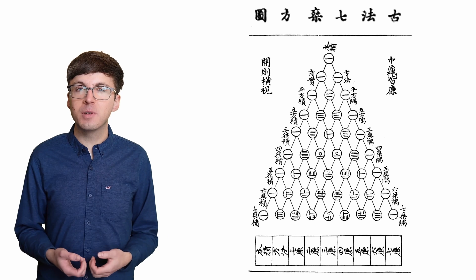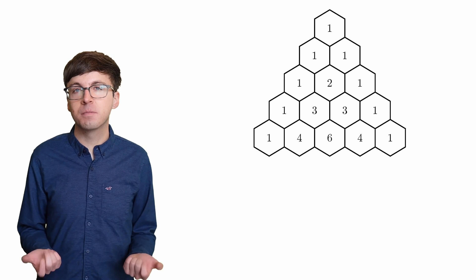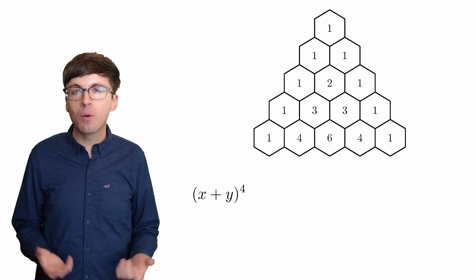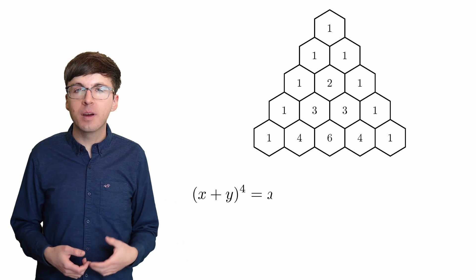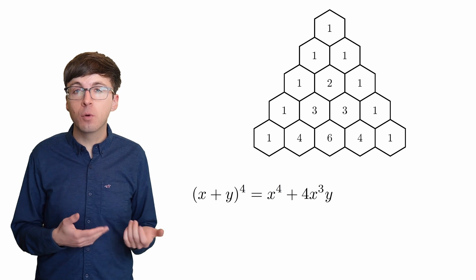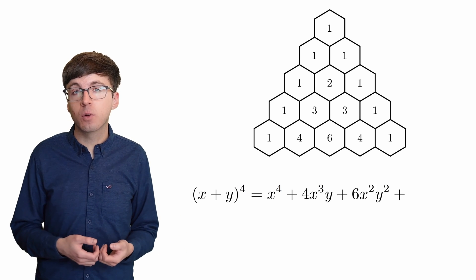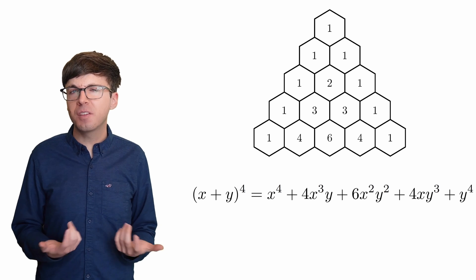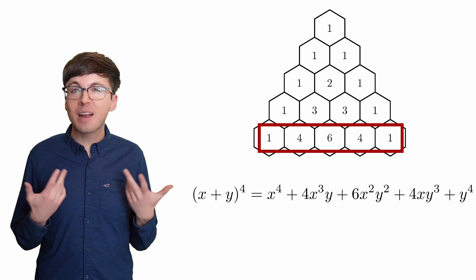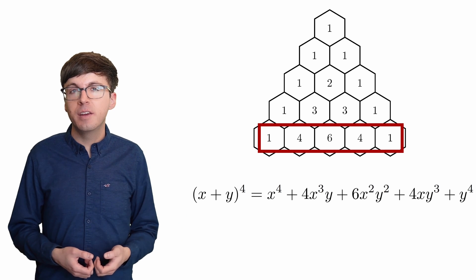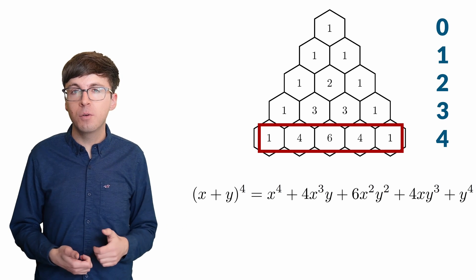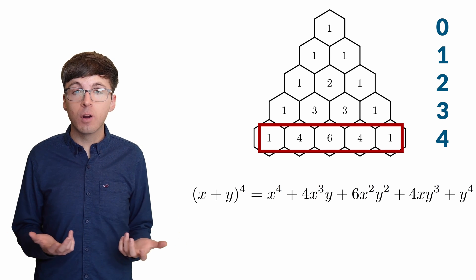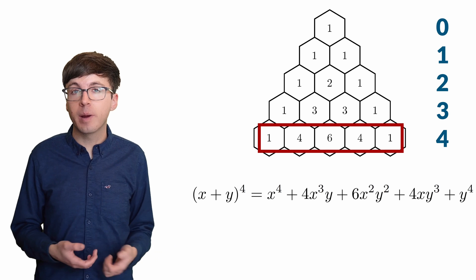So why were so many mathematicians studying this pattern? To see how this relates to algebra, let's look at (x + y) to the power 4. It's somewhat tedious to multiply this all out, but we get x⁴ + 4x³y + 6x²y² + 4xy³ + y⁴. The coefficients match exactly with that row of Pascal's triangle. If we number the rows starting from 0, then it's row 4 that gives us these coefficients, and the other rows give coefficients for the other powers.